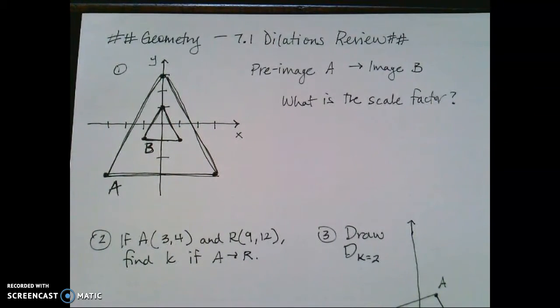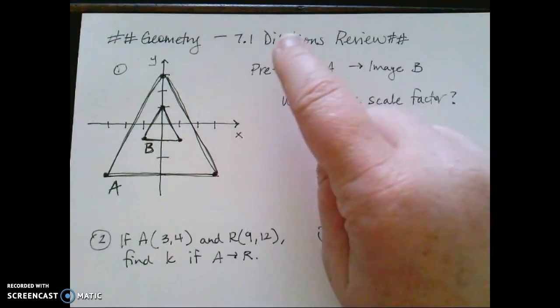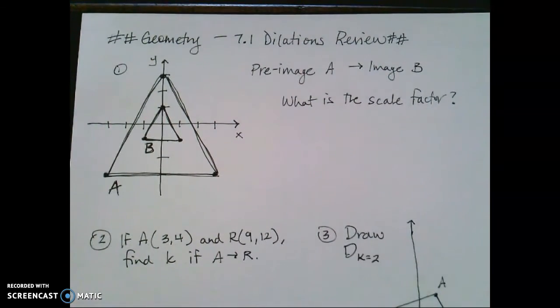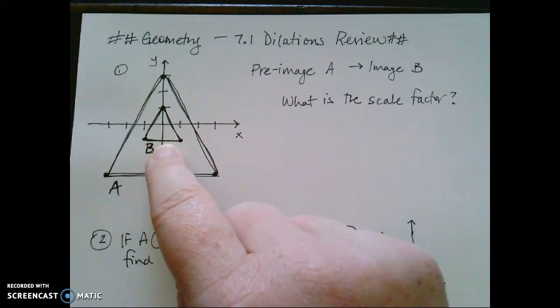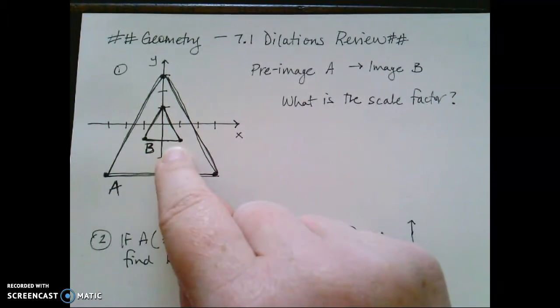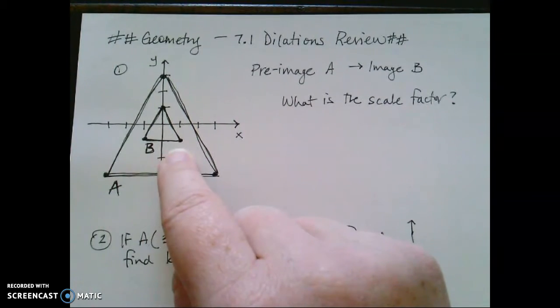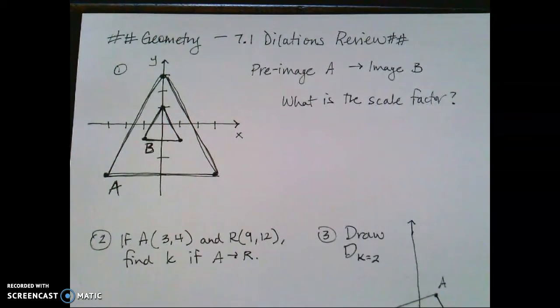All right, welcome back guys. This very short video is a quick review over Chapter 7 dilations. Remember, dilations are a non-rigid transformation. That means the shape of the image and the pre-image are not the same size. So therefore it's a non-rigid transformation.